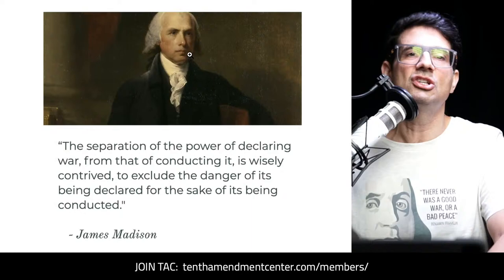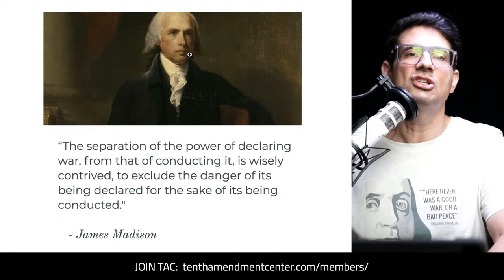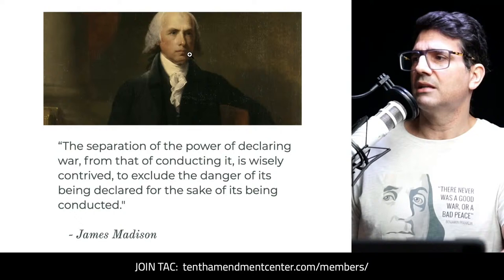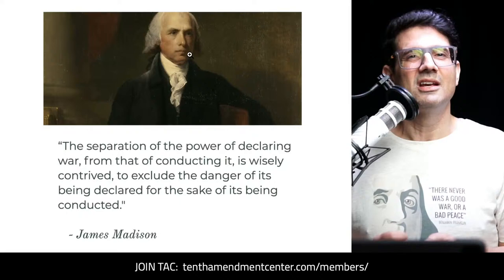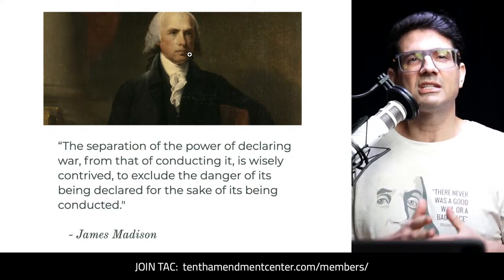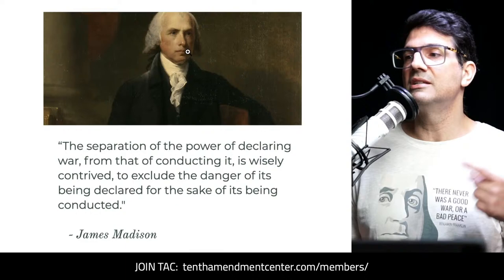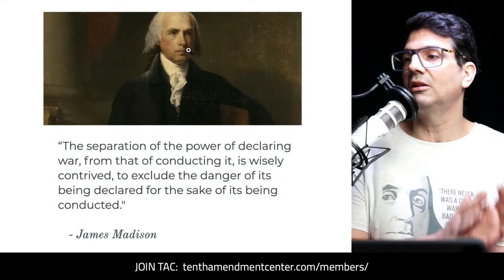The big question is: why did they do this? Madison has the best explanation in his political observations paper. He said: 'The separation of the power of declaring war from that of conducting it is wisely contrived to exclude the danger of its being declared for the sake of its being conducted.' The big concern to Madison was making sure no single person could make this decision — to prevent a war being declared precisely so that the same person could wage it.